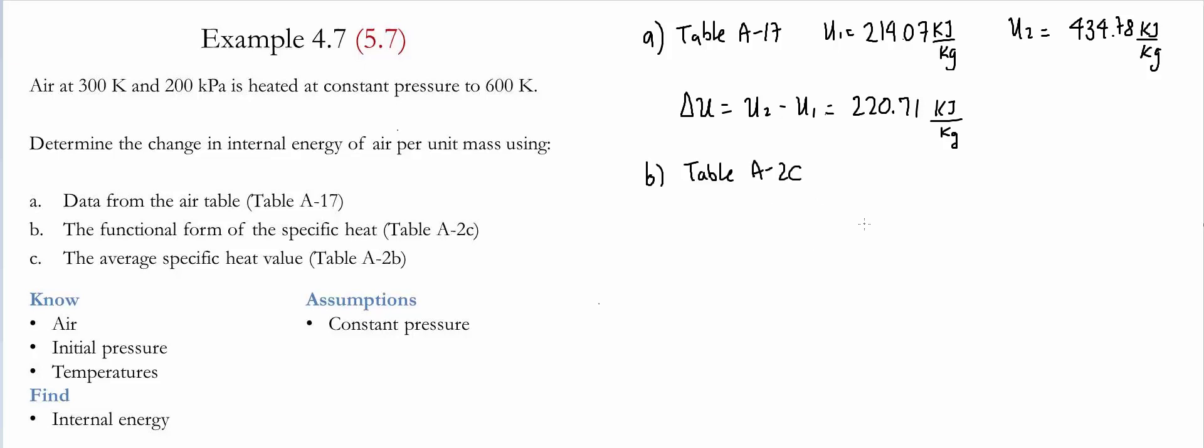Table A2C provides us the coefficient in order to find the specific heat at constant pressure in a molar basis. That is given by a third-degree polynomial equal to A plus BT plus CT squared plus DT to the third.